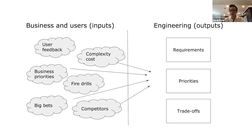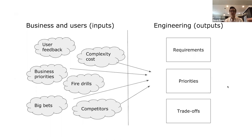When you look at what types of inputs you get from business and users, you have a broad range: user feedback, complexity cost, business priorities that can shift, fire drills you have to adapt to, big bets and innovations you want to do, competitive pressure, and even user feedback can sometimes be ambiguous. But you have to distill all these different inputs and priorities and make sure you're handing engineering very clear and unambiguous requirements, prioritizing across competing priorities so they can build things in order without too much context switching.